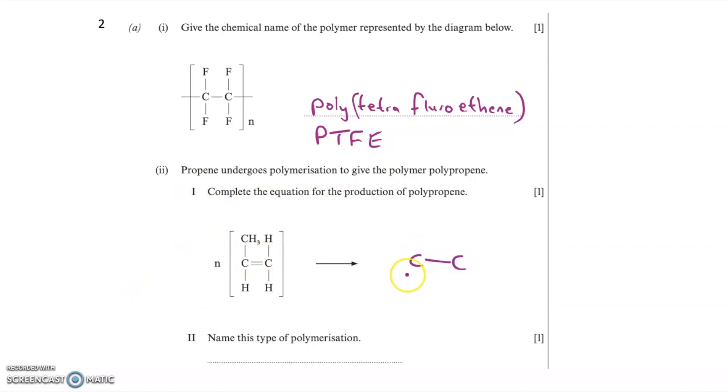Now part two says, propene undergoes polymerization to give the polymer polypropene. Complete the equation for the production of polypropene. So we have propene drawn on the left-hand side here, which is C3H6, and we have N propene molecules. So to draw the repeating unit, I have to remember to break the double bond. So I have a single bond between the two carbons here, and then I have a CH3, a H, a H, and a H. I make sure that the bonds come outside the brackets to show that this unit can join to other units.